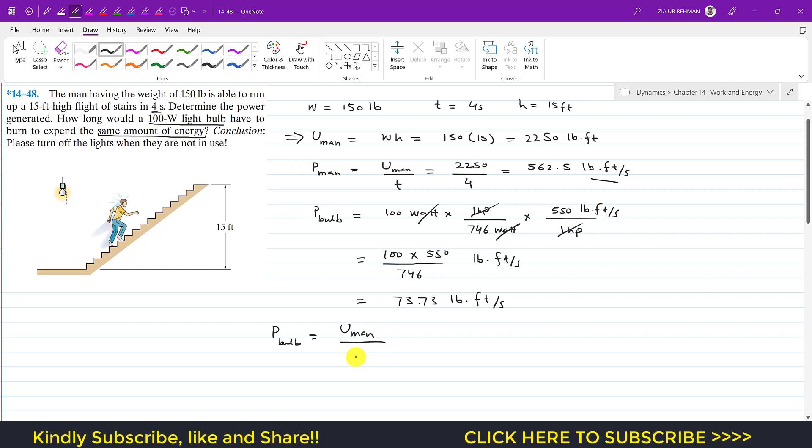So we can say that the power of bulb will be equal to the energy generated by man, or the work done by the man, divided by the time. So power of bulb is now known which is 73.73. If we cross multiply, then we can say that t will be equal to u of man divided by 73.73.